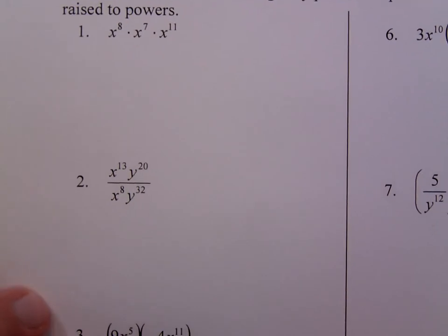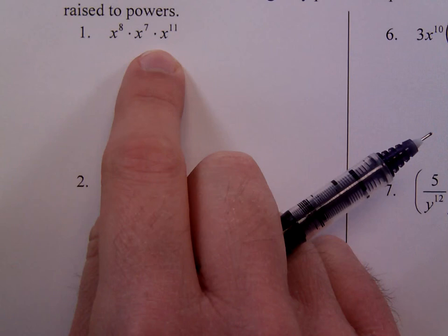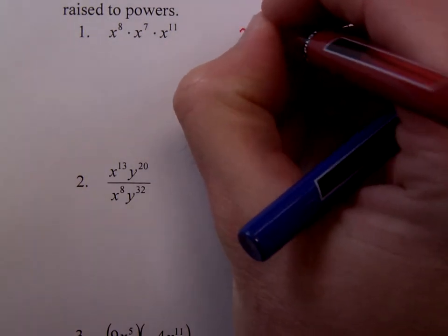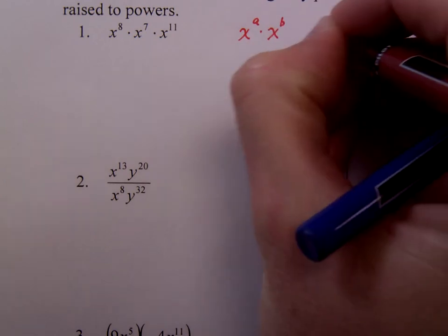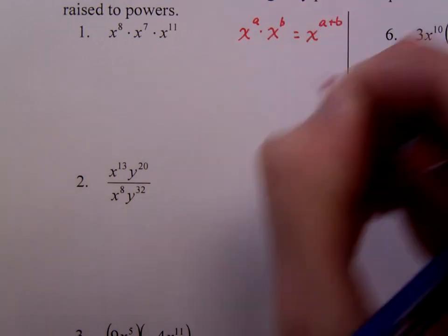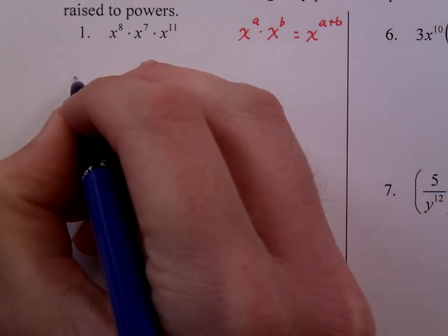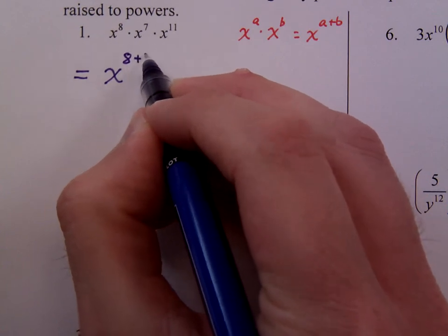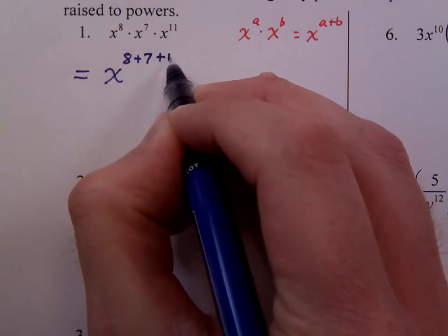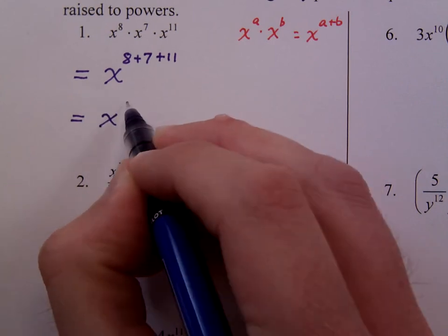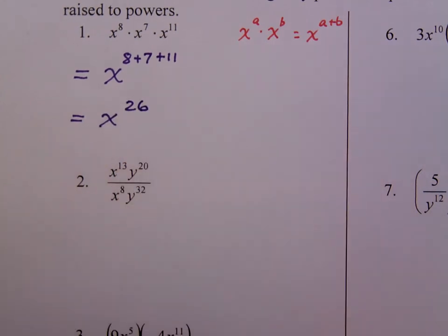In number 1, you are multiplying and you have the same base, which is x. Remember that when you multiply and you have the same base, all you need to do is add the exponents. Basically, you're adding the factors. So how many factors of x do I have? You have 8 here, plus 7 more there, plus 11 here. So all together, this is x to the 26th.